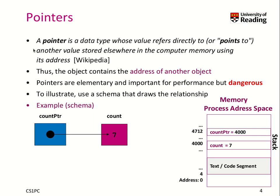Let's get started with a short definition. What is a pointer? In short, a pointer is a data type where you refer — pointing to another value stored somewhere in the computer memory — using the address. Thus the object stored is indeed the address of another object.